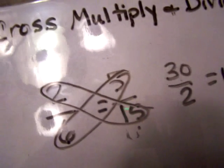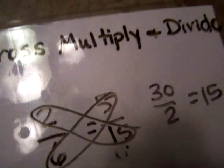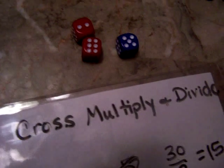And there you've solved for the missing variable. Keep throwing different die and working it out on your scratch sheet until you feel comfortable with cross multiply and divide.